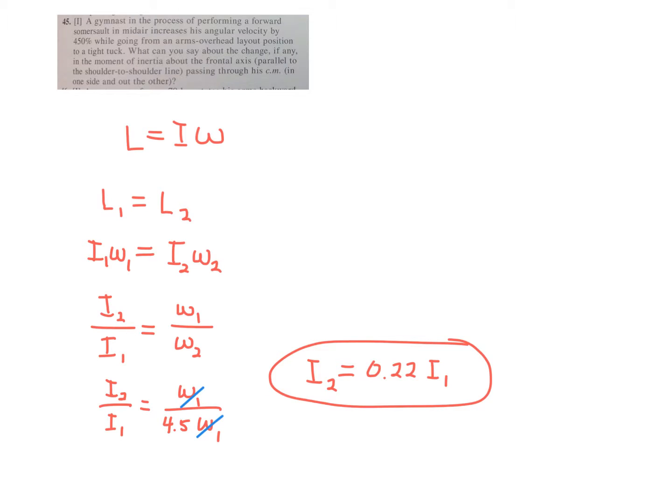And you get I sub 2 is basically 20% of I1. In other words, your rotational inertia went down by a factor of 4.5, and the speed went up by a factor of 4.5 when you tuck in.